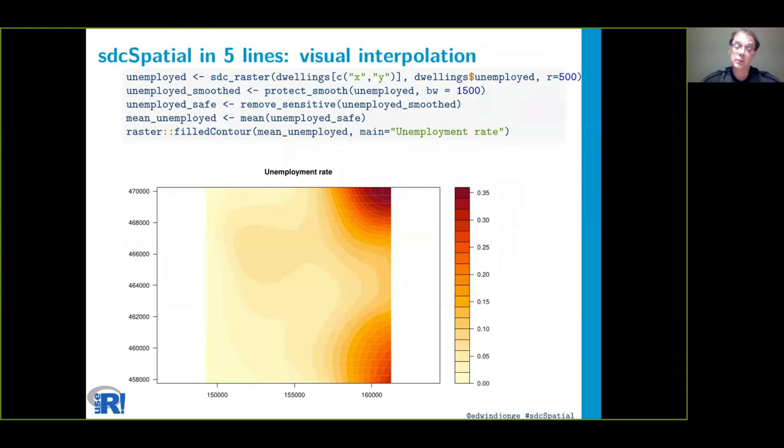sdcSpatial, if you're interested in creating privacy protected maps, would be fine for you. In just five lines you can create a privacy protected map: create an sdc_raster object, apply smoothing, remove remaining sensitive cells, extract the raster, and plot the remaining raster.